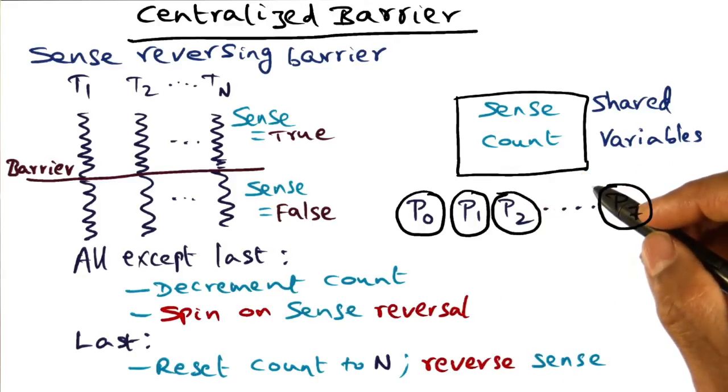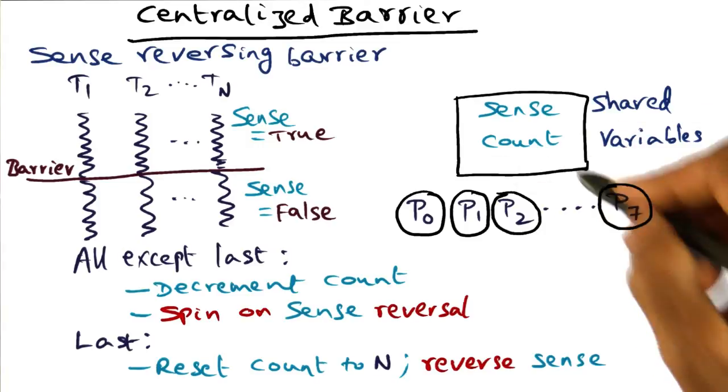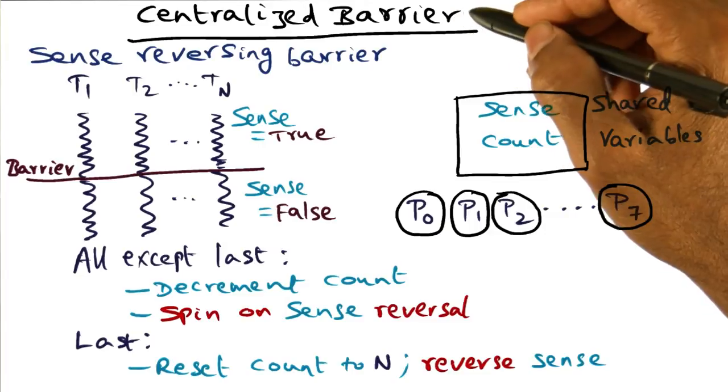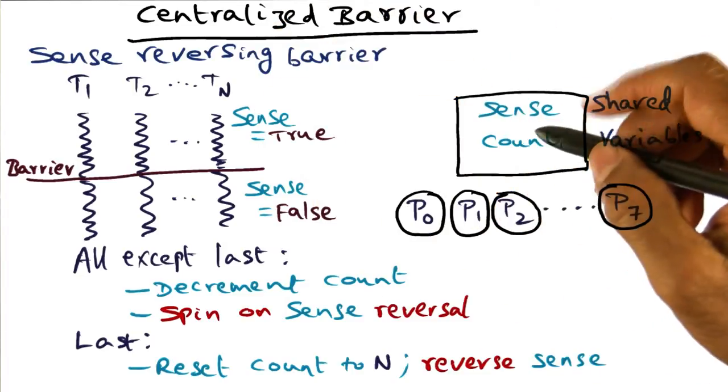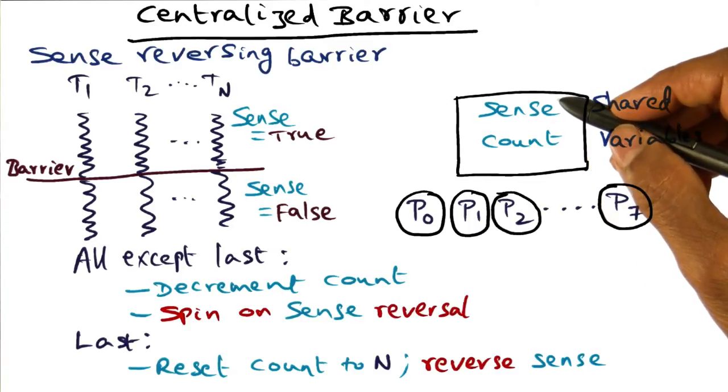So we've gotten rid of one of the spinning episodes that used to be there in the pure counting version of the centralized barrier. The centralized barrier is simple and intuitive. And with the sense reversing barrier, we've got rid of two spinning episodes and got it down to one. All of these are good things.